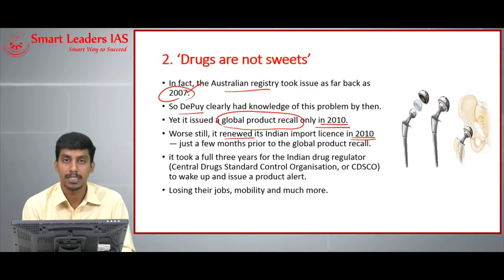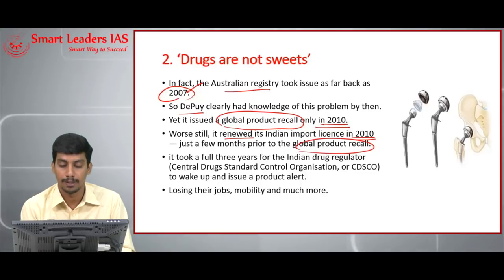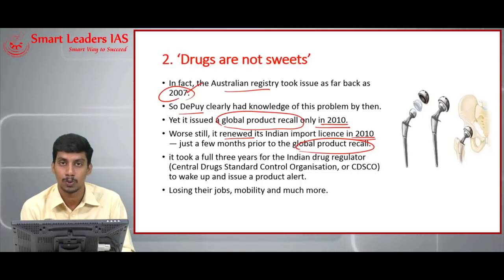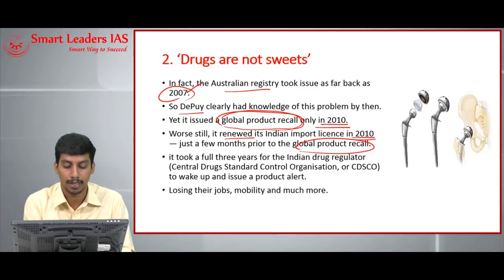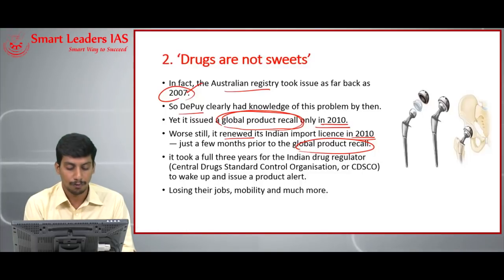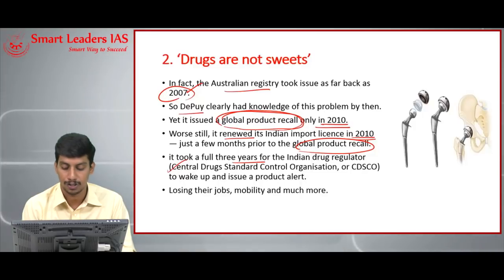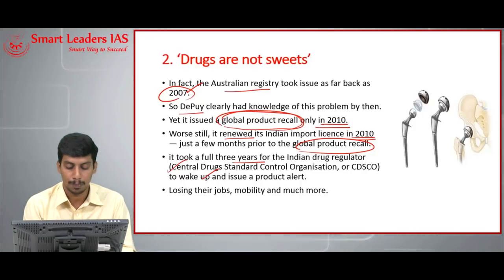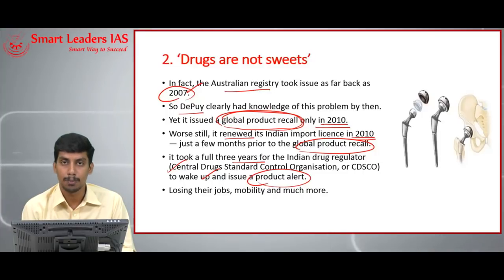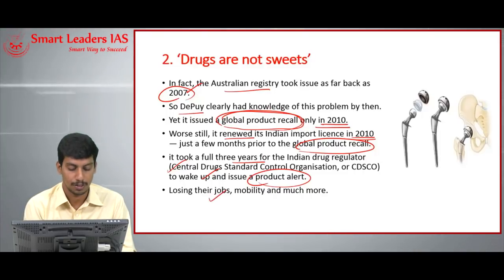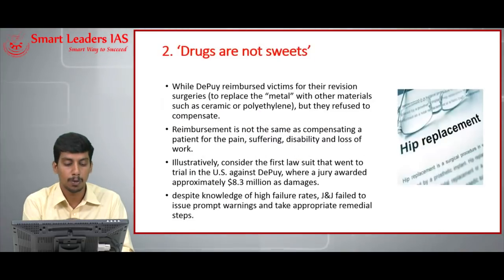DePuy issued a global product recall only in 2010, but the worst thing is that it renewed its Indian import license in 2010, just a few months prior to the global recall. Despite being aware the implant was causing serious problems, it still renewed its Indian license. It then took a full three years for India's Central Drug Standard Control Organization (CDSCO) to issue a product alert.